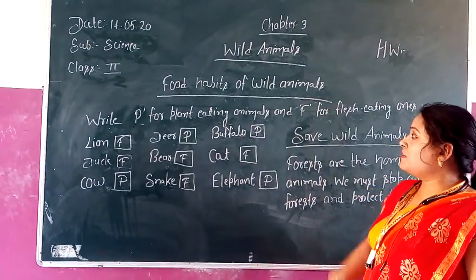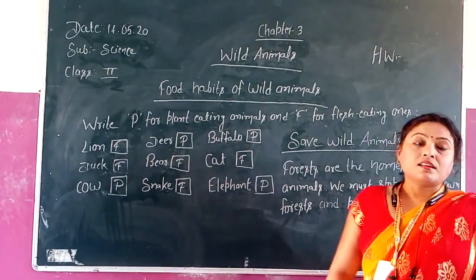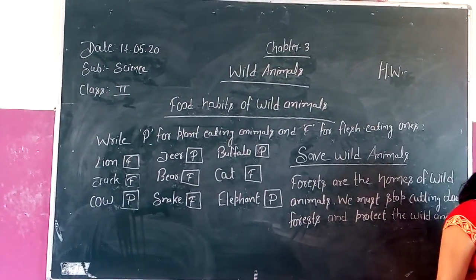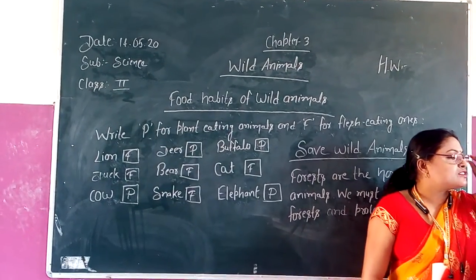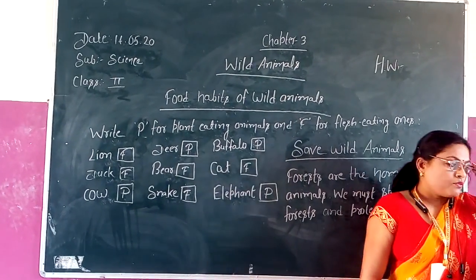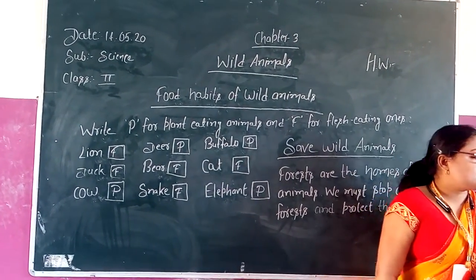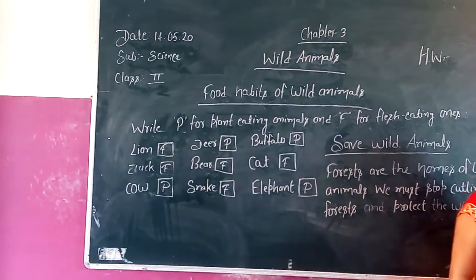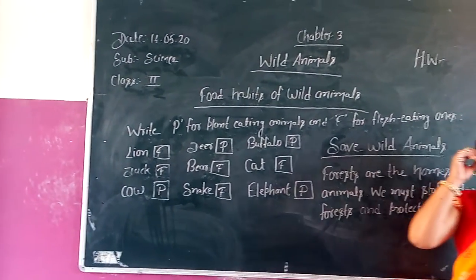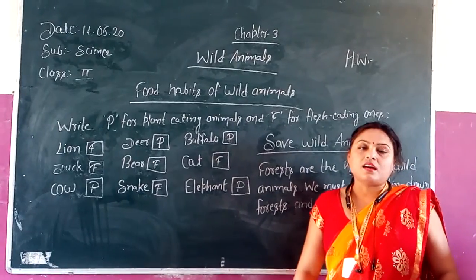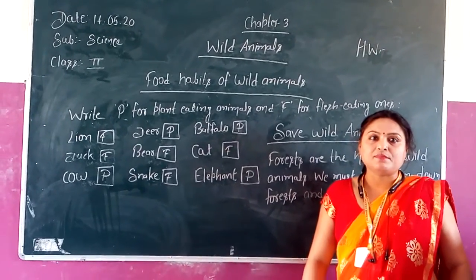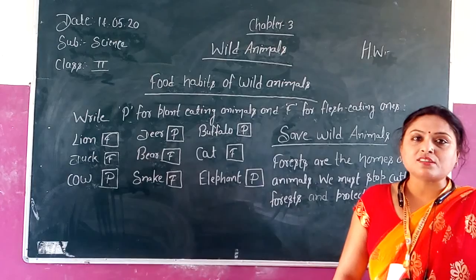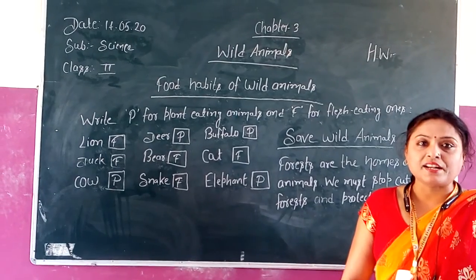Food habits of animals: Different wild animals eat different types of food. Wild animals like the lion and tiger hunt animals and eat the flesh of other animals. They are called flesh eaters or carnivores.